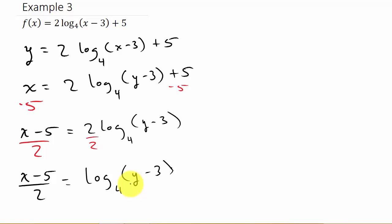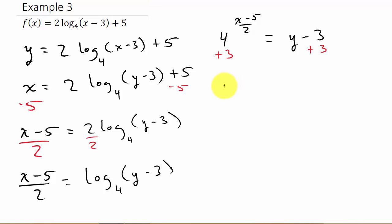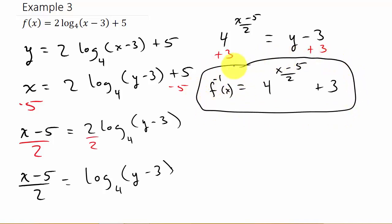Now we can convert to exponential form. The base of the log is 4, so: 4^((x−5)/2) = y − 3. We're still solving for y, so add 3 to both sides: y = 4^((x−5)/2) + 3. Then change y to the f-inverse symbol: f⁻¹(x) = 4^((x−5)/2) + 3. That is your inverse.